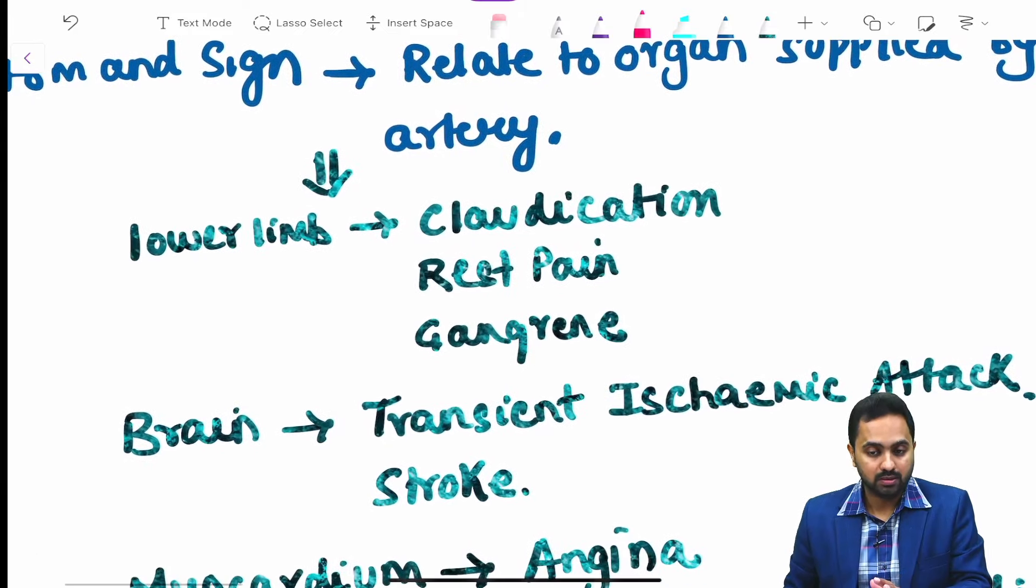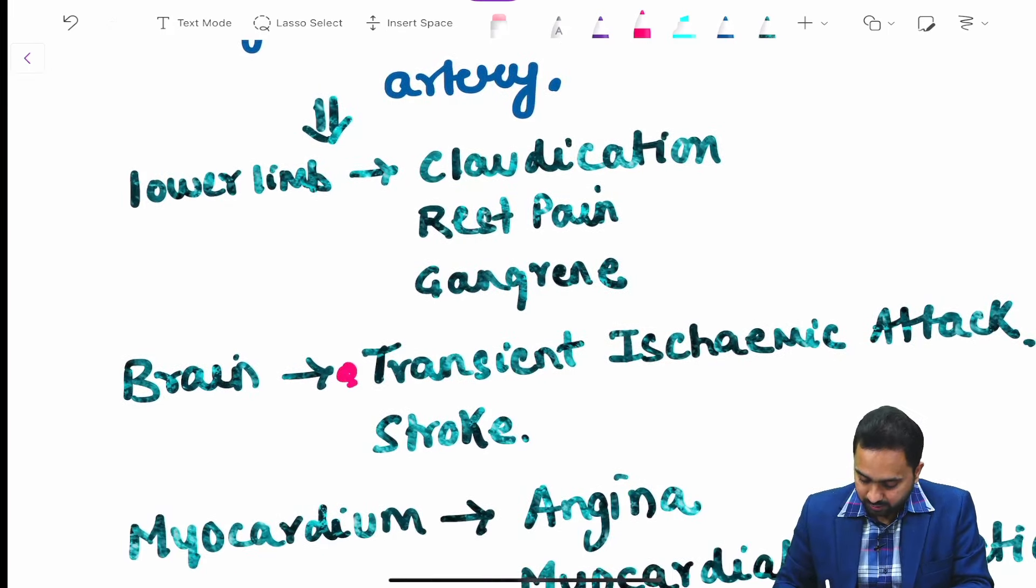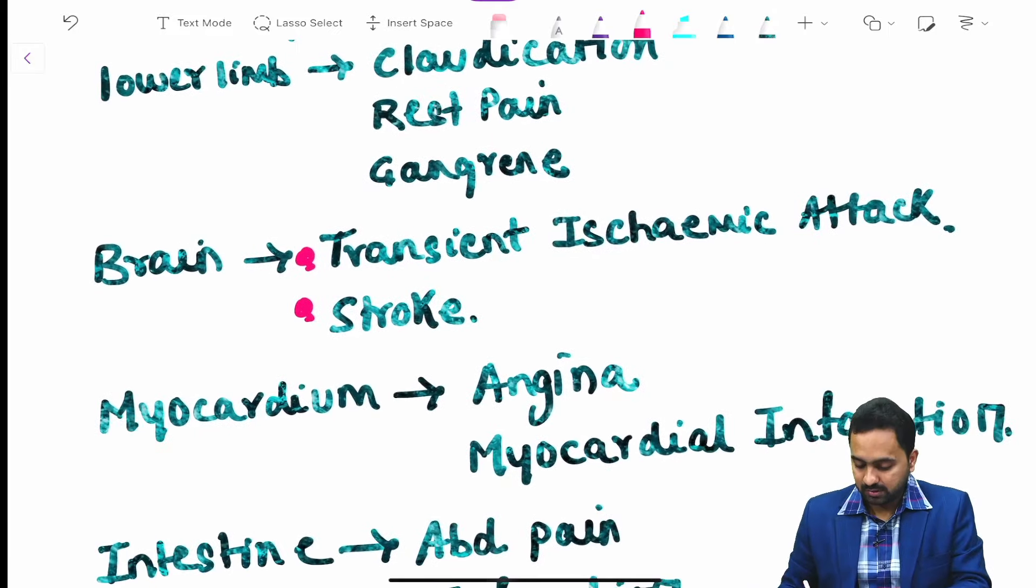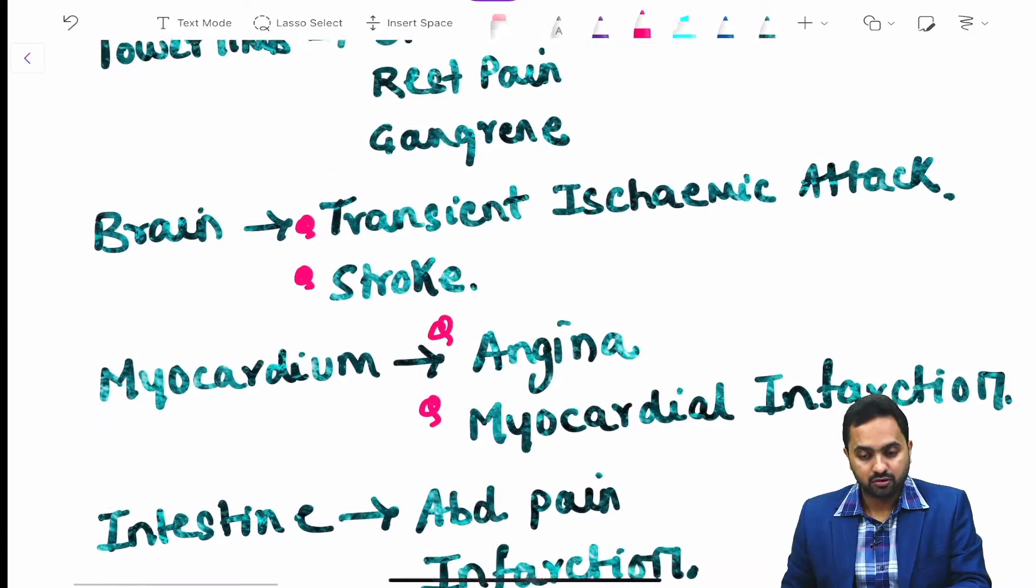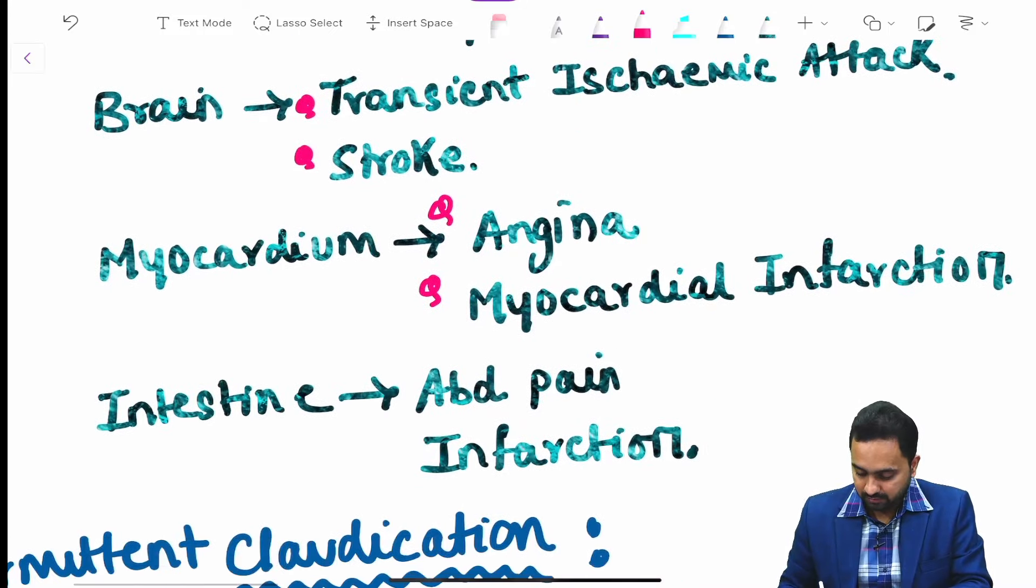For example, the lower limb presents with claudication, rest pain and gangrene. In the brain, transient ischemic attack and stroke. In myocardium, angina and myocardial infarction. In intestine, abdominal pain and infarction.